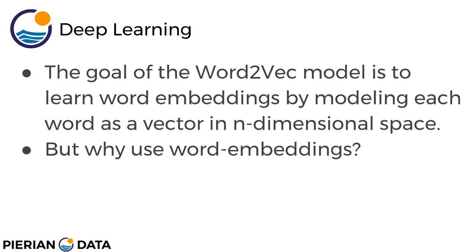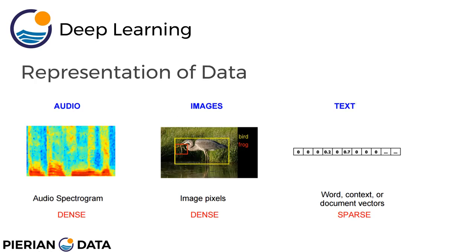The question arises: what is our actual motivation behind using word embeddings instead of just a count approach? If we think about the representation of data across various sources such as audio, images, or text — audio and images happen to be really rich, high-dimensional, and very dense in their information, such as an audio spectrogram or image pixels. However, when you take a count-based approach to text data, you end up getting a very sparse data set.